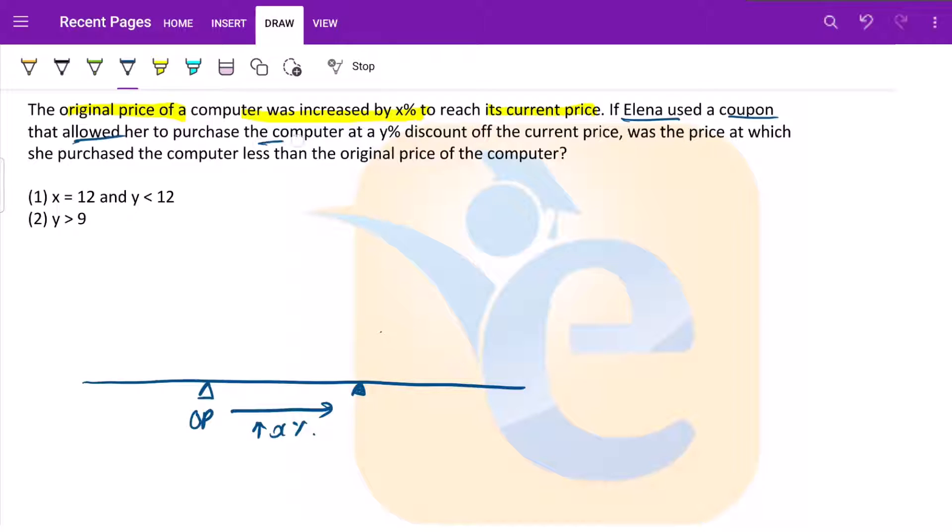Alina used a coupon that allowed her to purchase the computer at Y percent discount of the current price. So this is the current price. Now there was a Y percent discount. The discount can be anything, Y percent. So say these are the various possibilities of Y percent. Was the price at which she purchased the computer less than the original price of the computer? So what do we need to understand? Basically this Y percent discount, did this lead to something that is still greater than original price or something that is less than the original price? That is what we need to find out.